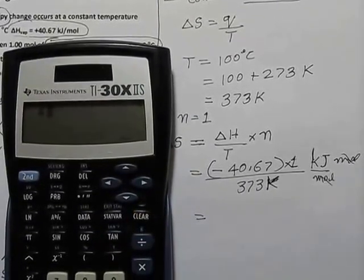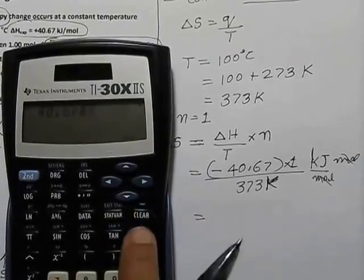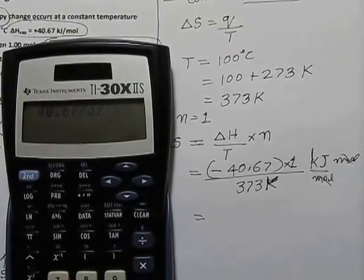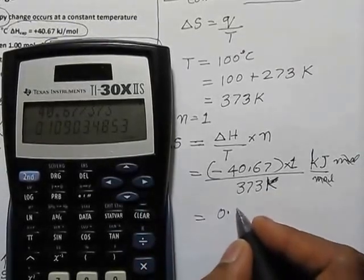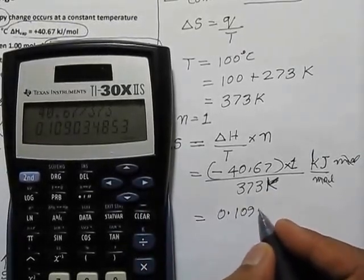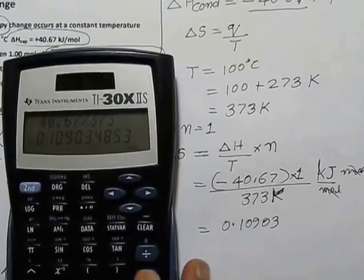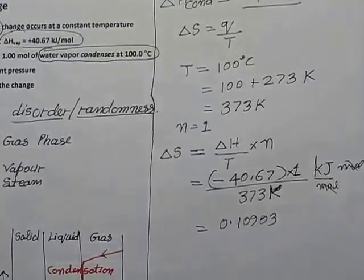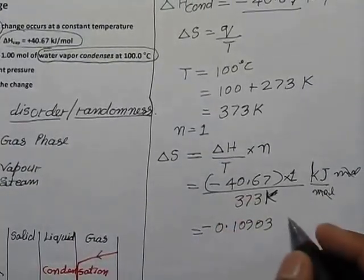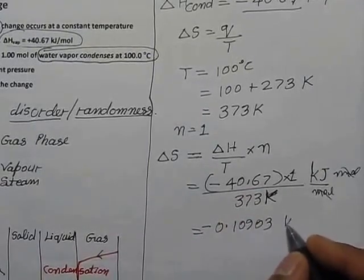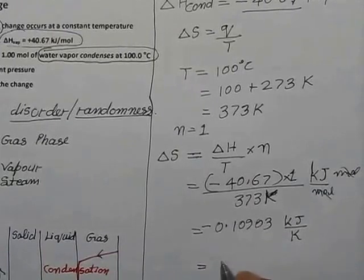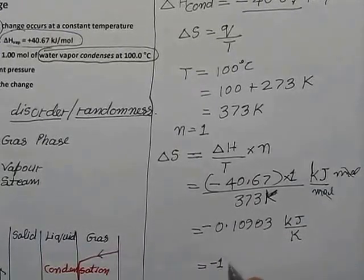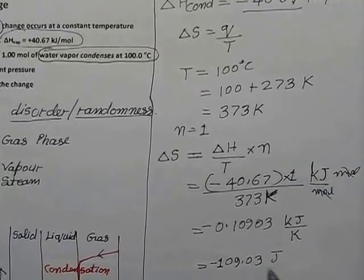40.67 divided by 373, and the answer will come to 0.10903. We have to use minus sign, and unit will be kilojoule per Kelvin.